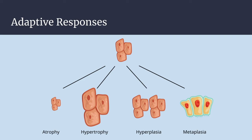To summarize: cells undergo adaptive responses when stress disrupts homeostasis. In atrophy, cells shrink; in hypertrophy, they grow in size; in hyperplasia, they increase in number; and in metaplasia, there is a change in cell phenotype. Typically when stresses are removed, cells revert to baseline. If cell injury or stress is too severe and cells cannot adapt, they will either become injured and eventually heal if the stress is removed, or they will die — and that cell death will be covered in the next video.